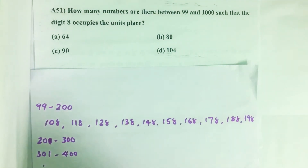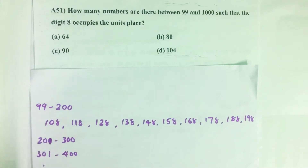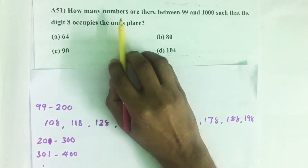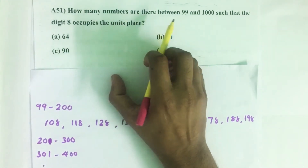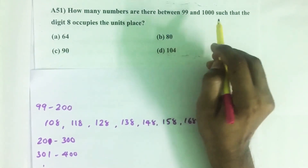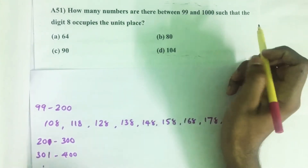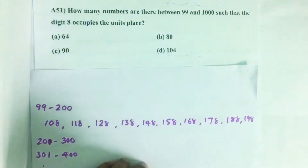Hello everyone. Here I am going to solve the 2017 CSAT question number 51 from question paper series A. The question is: how many numbers are there between 99 and 1000 such that the digit 8 occupies the unit's place?